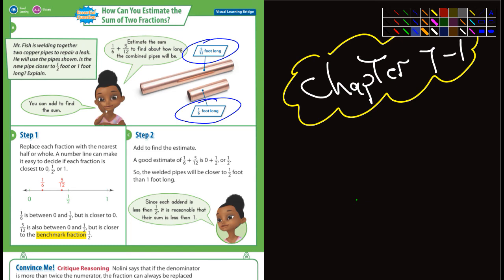It says Mr. Fish is welding together two copper pipes to repair a leak. They'll use the pipes that are shown here and this is one that's five twelfths of a foot long and another one is one-sixth of a foot long. And is the new pipe closer to one half a foot or one foot in length? Explain.